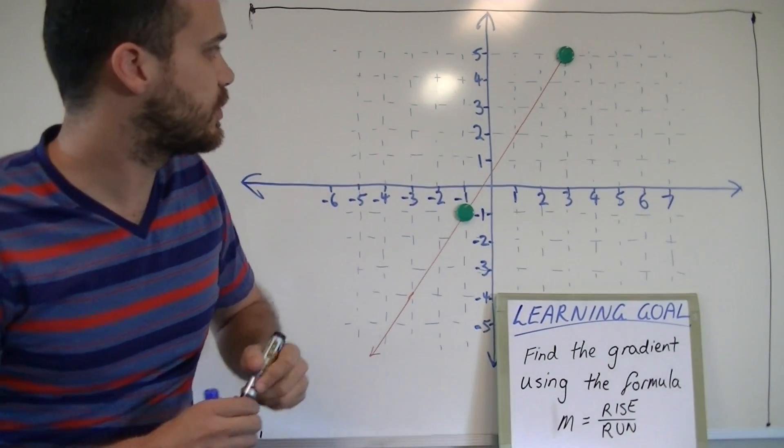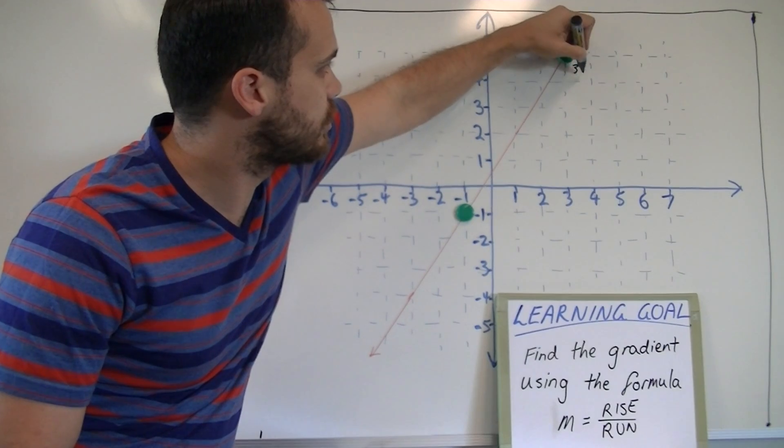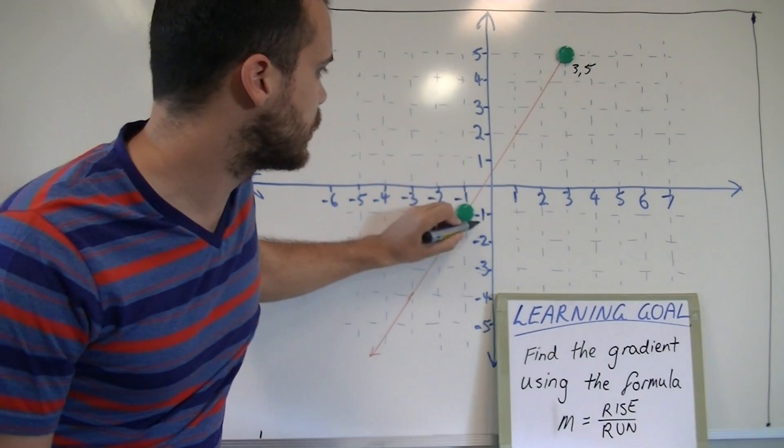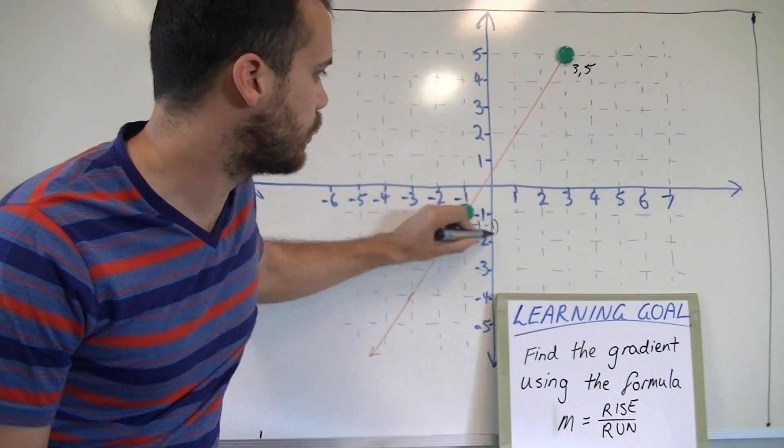Now, the coordinates for those points are 3, 5, and that one looks like negative 1, negative 1.